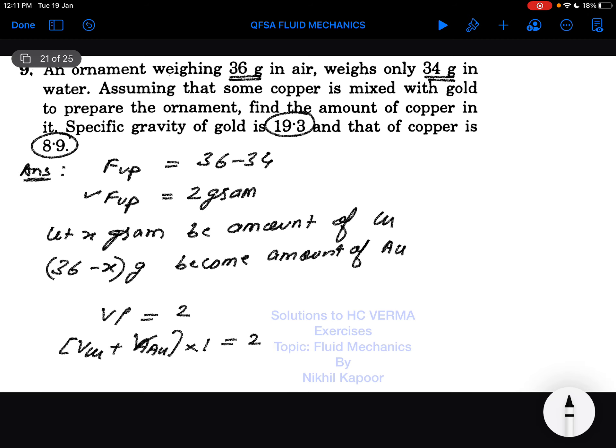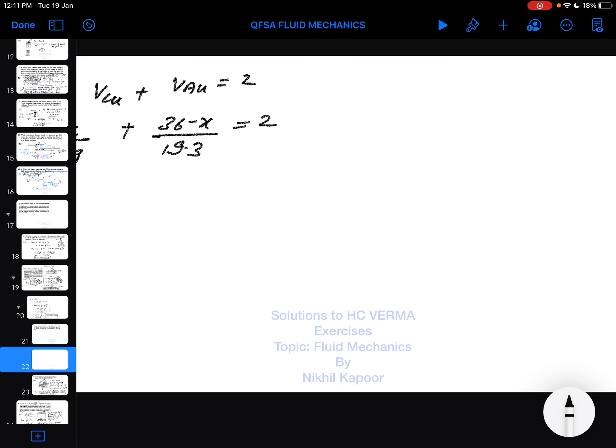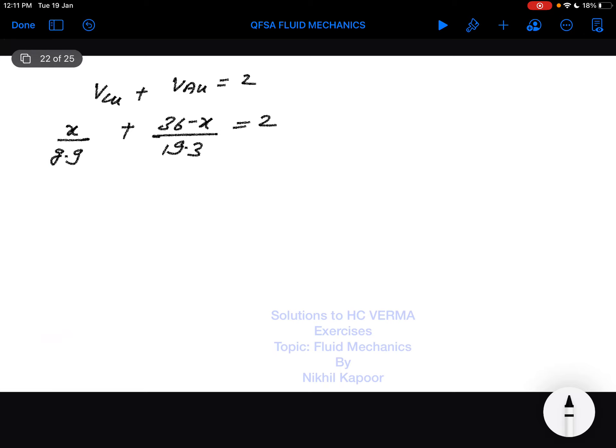On cross multiplying, we get 19.3x plus 8.9 times 36 minus 8.9x equals 2 times 8.9 times 19.3. Now let's multiply these terms.